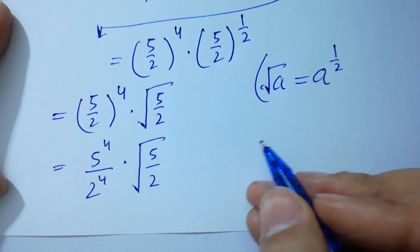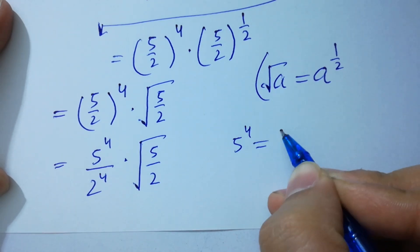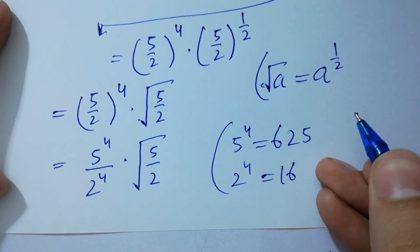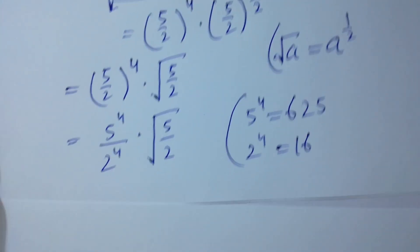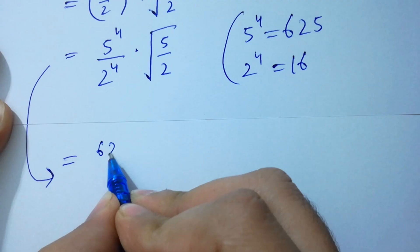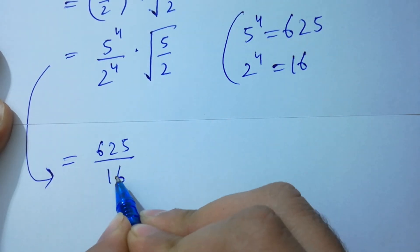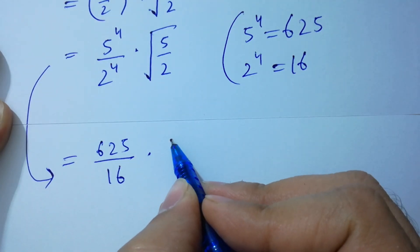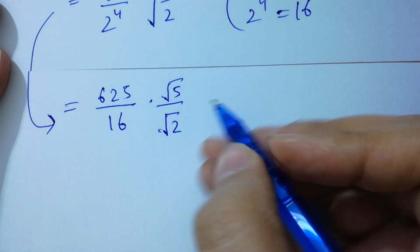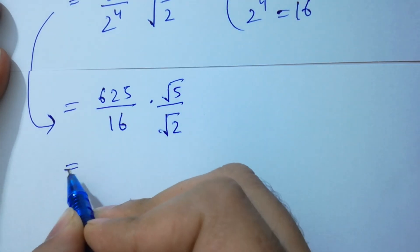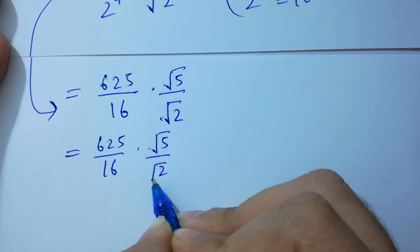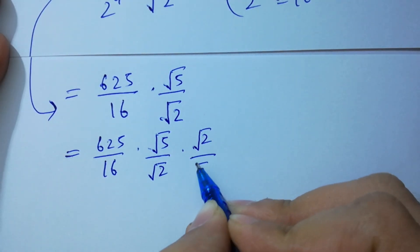Now, 5 to the power 4 equals 625 and 2 to the power 4 equals 16. So we have 625 over 16 times square root of 5 over square root of 2. To rationalize, we multiply by square root of 2 over square root of 2.